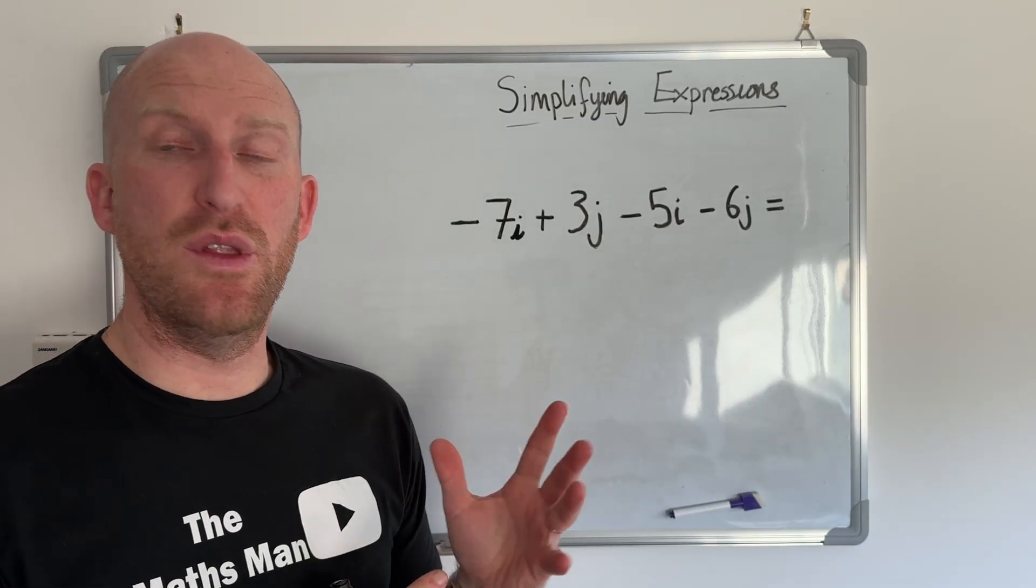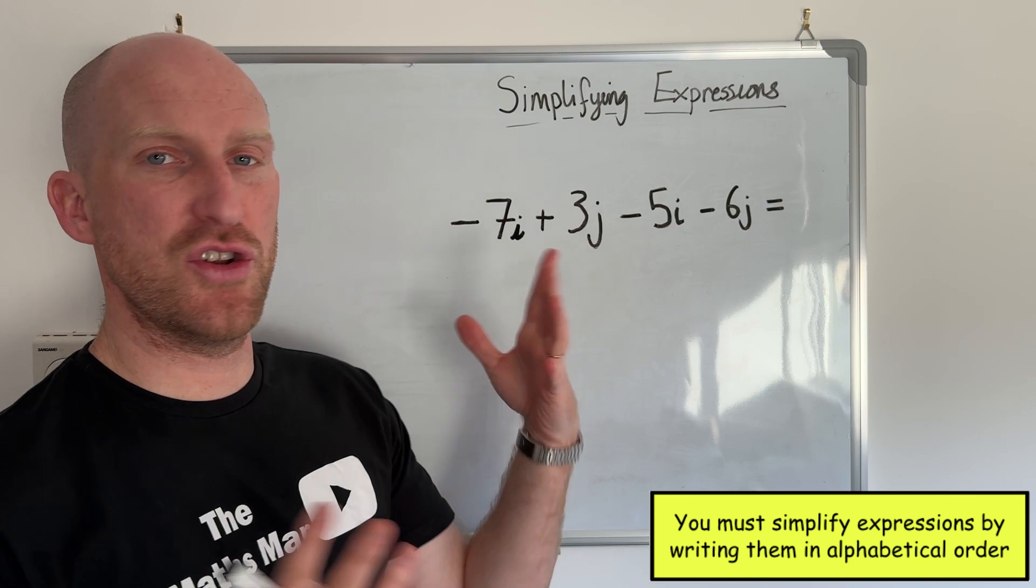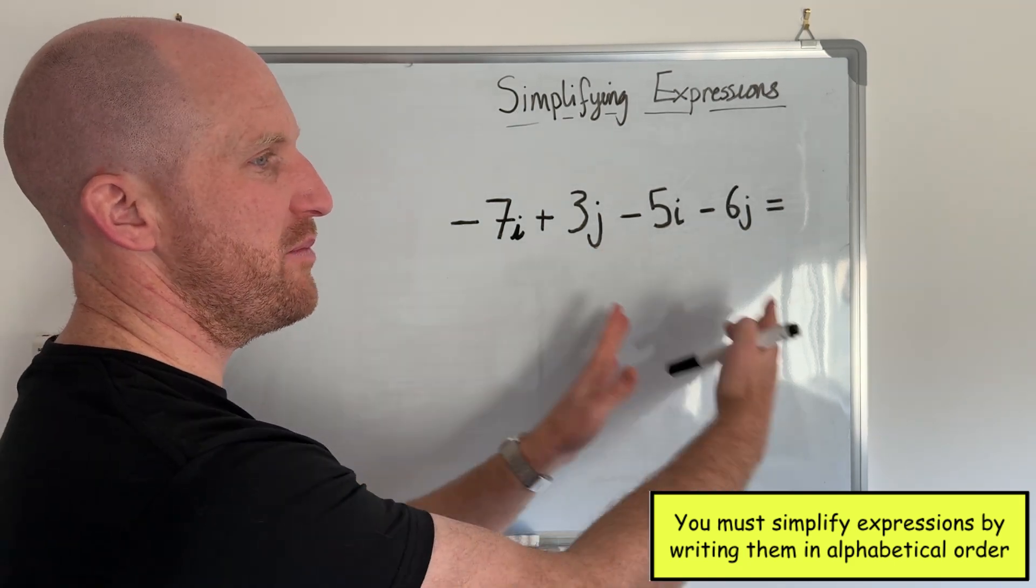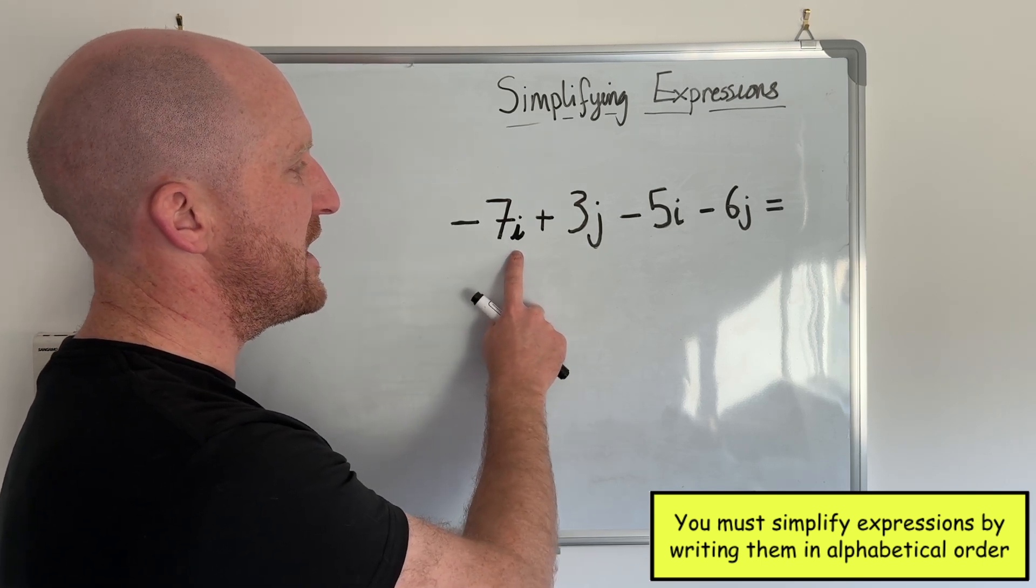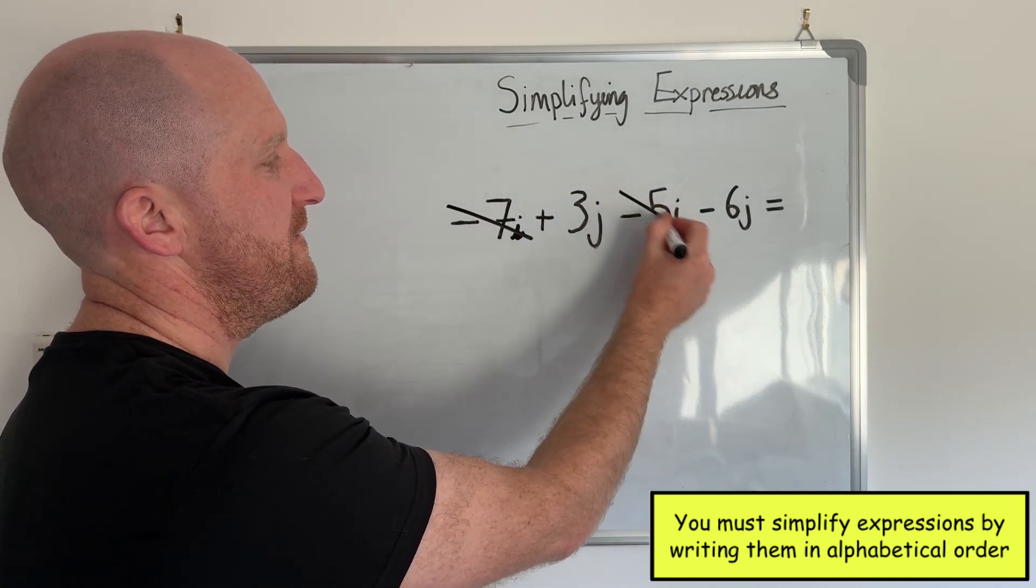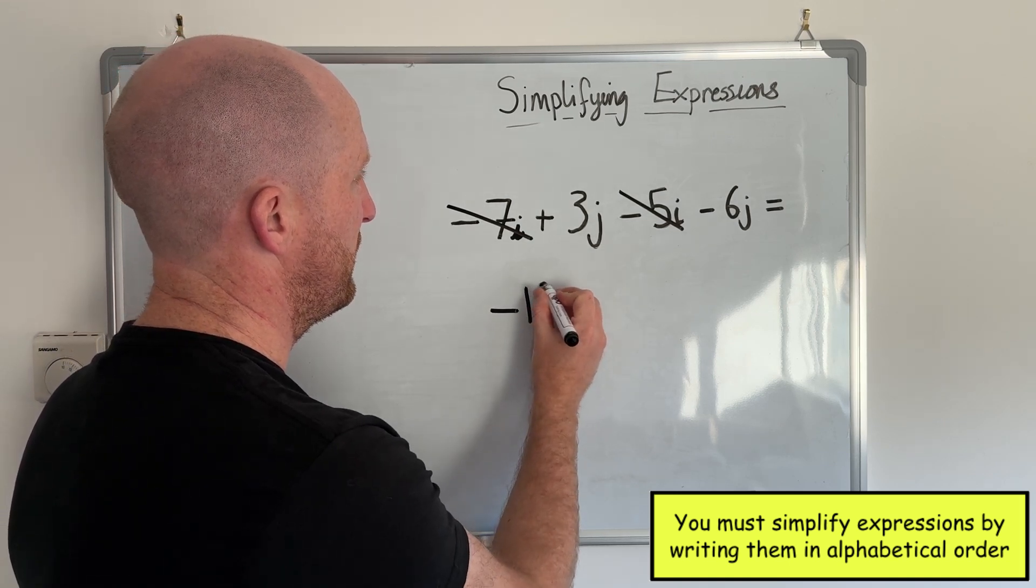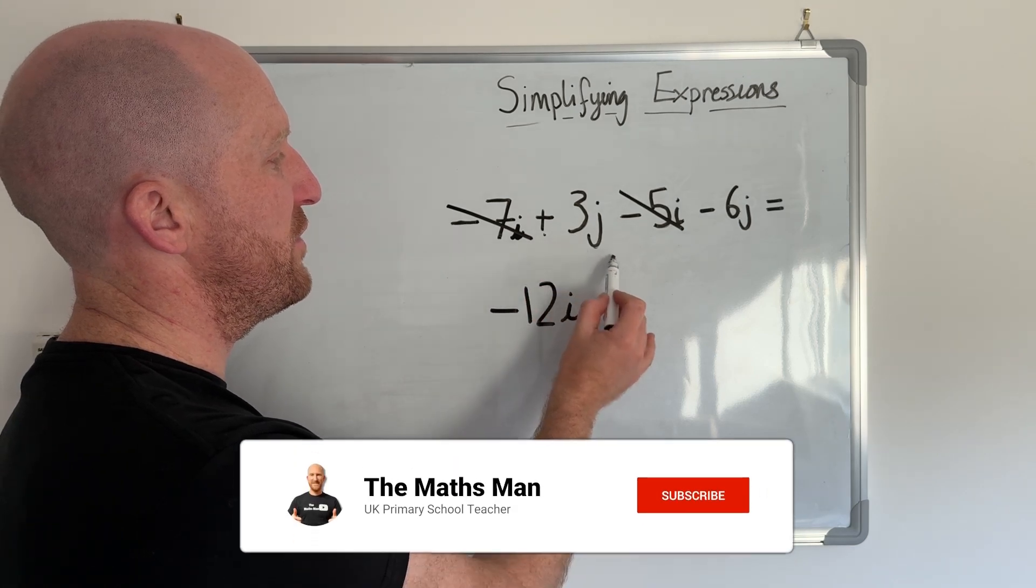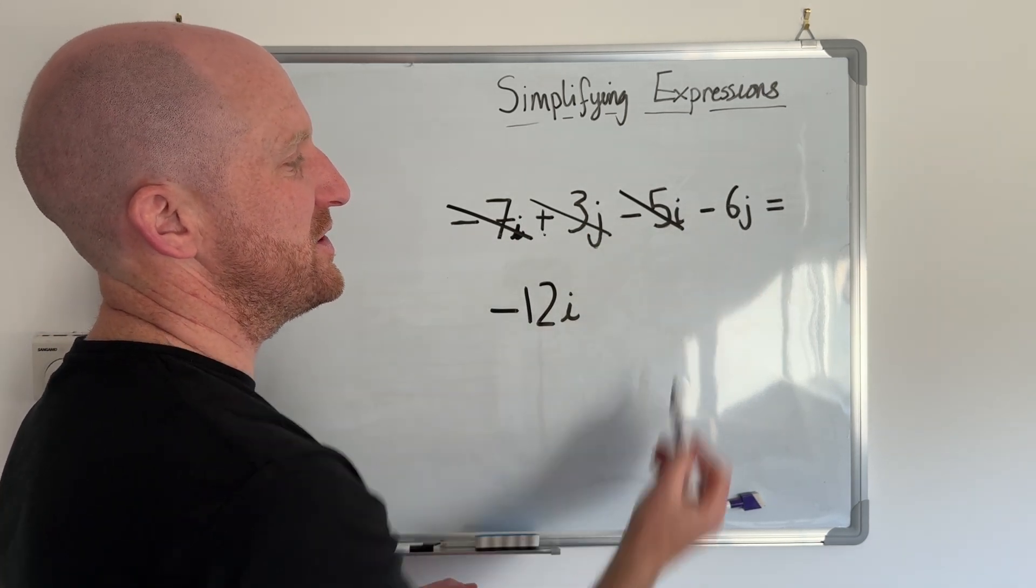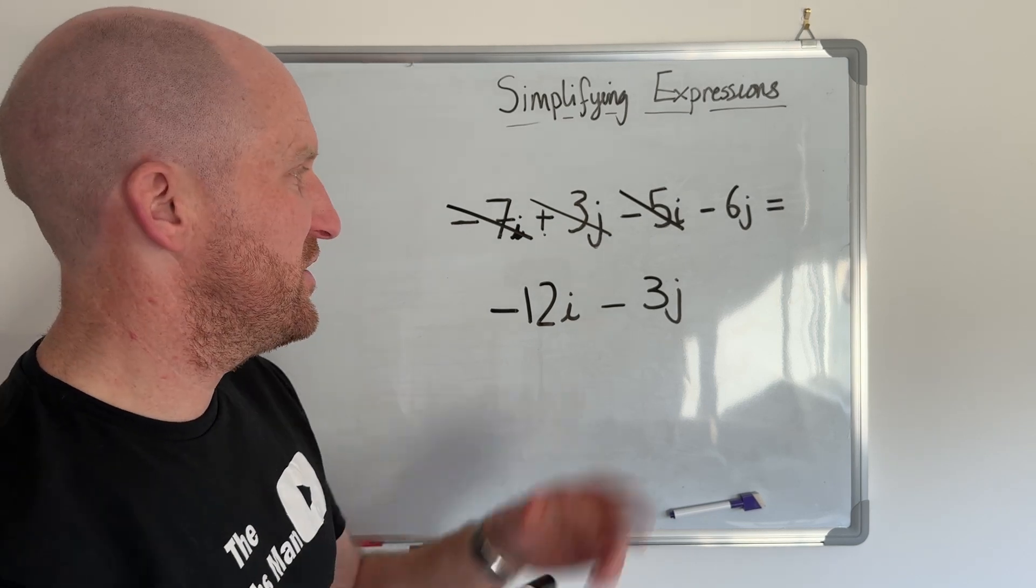So this next example is similar to the one that I did previously. But in the next example we're going to be getting a little bit more difficult. So here I've got two terms again. I've got i and I've got j. So I'm going to be collecting the terms and I'm going to be making it simpler to understand. So I'm going to start with the i first because remember it must be alphabetical order when we write the answer. So I've got negative 7i take away 5i. So negative 7i take away 5i is going to give us negative 12i. And then I've got plus 3j take away 6j. So if I've got positive 3j and I'm taking away 6j. That's going to leave me with negative 3j.